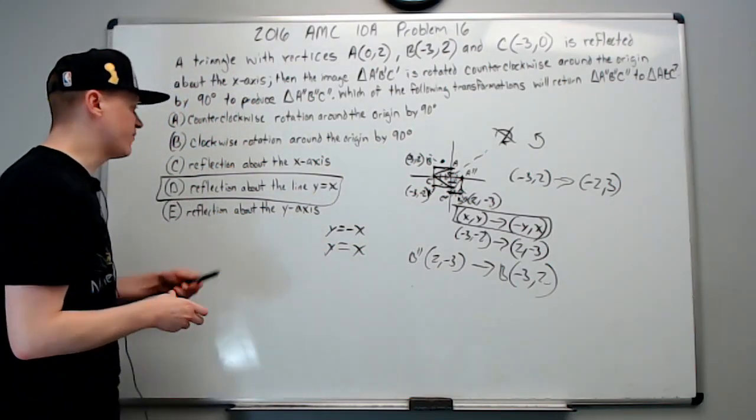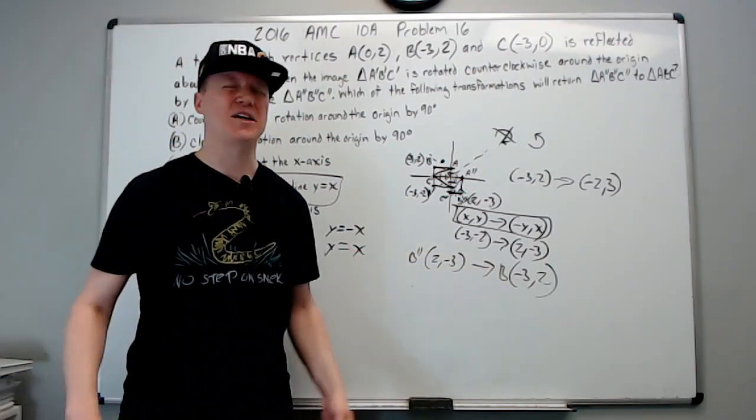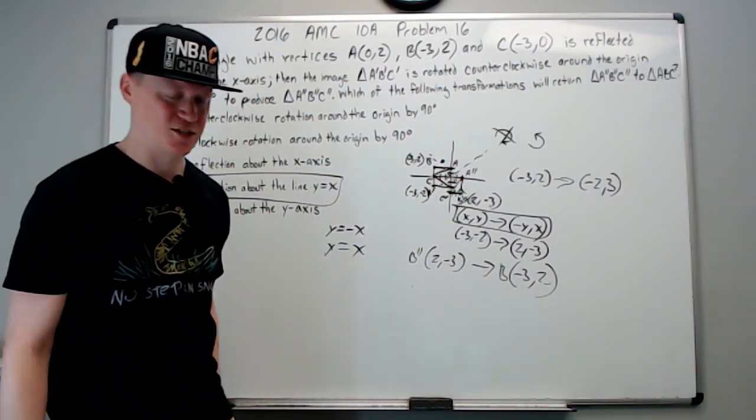And that's it for this problem. The answer was D, reflection about y equals x. We could have gone through these one at a time, but good to take a quick check and see if we recognize the transformation. Next problem.